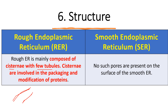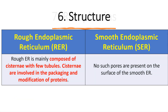Cisternae are involved in the packaging and modification of proteins. Where ribosomes are present, they are associated with protein synthesis, so rough ER has more major cisternae because cisternae are associated with protein packaging and modification. In smooth endoplasmic reticulum, because there are no ribosomes, they also lack the narrow pores present on rough ER for protein transportation.